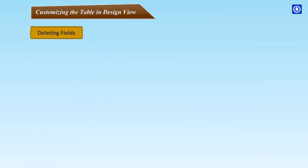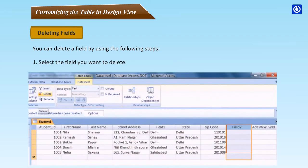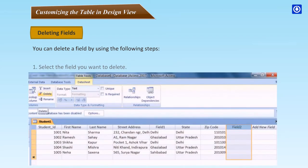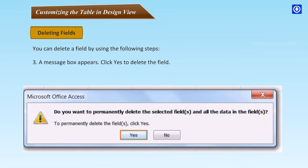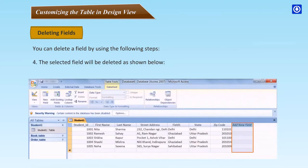Deleting Fields: You can delete a field using the following steps. Select the field you want to delete, then click the Delete button in the Fields and Columns group. A message box appears; click Yes to delete the field. The selected field will be deleted.